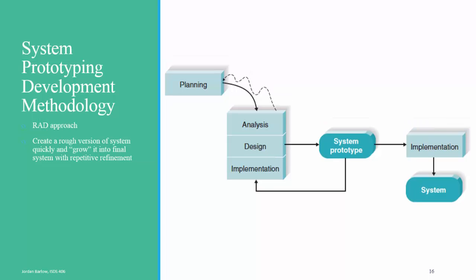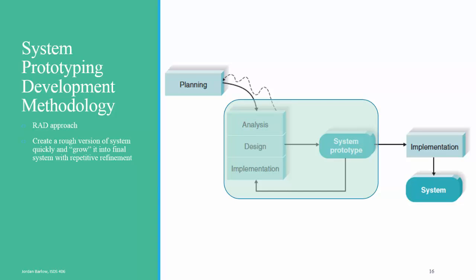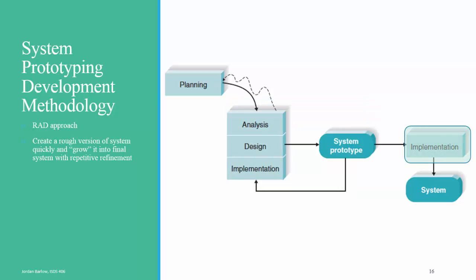Let's take a look at system prototyping development methodology. In this methodology, the planning is done all at the beginning, and then there is a series of analysis, design, and implementation phases that go iteratively while the system prototype is developed. The difference between system prototyping and iterative development is that the system prototype is never fully functioning. In iterative development, you have a full version of the system at the end of your first analysis, design, and implementation, and then improvements are made to that system. With a prototype, you go piece by piece — in the first prototype, you might only have the most critical elements of the system ready for the users. It does not replace the old system; it's simply a prototype. But users still have the opportunity to give feedback before more analysis, design, and implementation is done. And then finally, the prototype is converted in the final implementation phase to the full system.